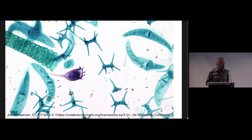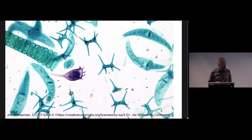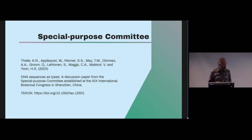So the problem. We can't name many organisms we know exist. In particular, in this case, we're talking about algae and fungi — particularly single-celled ones — because we need to have a type specimen, and that's written into the code. Without a type specimen or maybe a culture, we can't put a name on them yet. Back in Shenzhen, suggestions to use DNA types were rejected, but a special purpose committee was set up to look into this problem.